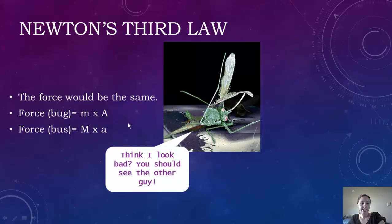And that's because the force of the bug would be mass times the acceleration. And the force of the bus is also going to be mass times acceleration. So they're going to be equal because you still have the same formula. It's just the numbers are going to be switched. But either way, when you multiply it, you're going to come up with the same answer.